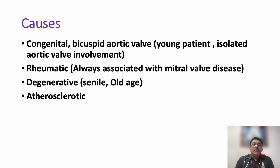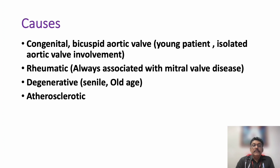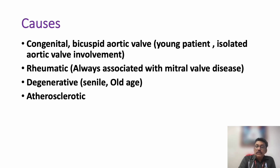The most common cause for aortic stenosis is a congenital disorder — bicuspid aortic valve — occurring mainly in young patients or those with isolated aortic stenosis. When other valves like the mitral valve are involved, the common cause is rheumatic heart disease. In old age, it is due to degenerative atherosclerotic or sclerotic aortic valve.